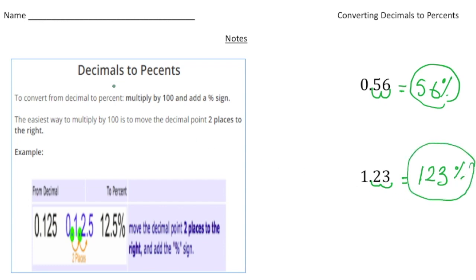To convert a decimal to a percentage, you move the decimal two spots to the right, because what you're doing is multiplying by 10 and 10 again, and then you add the percent sign.